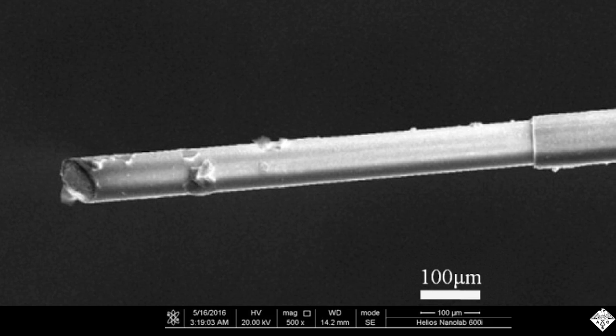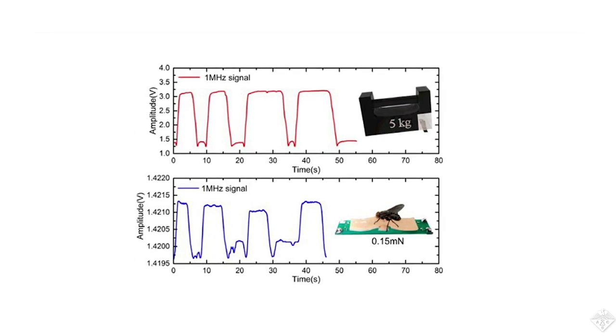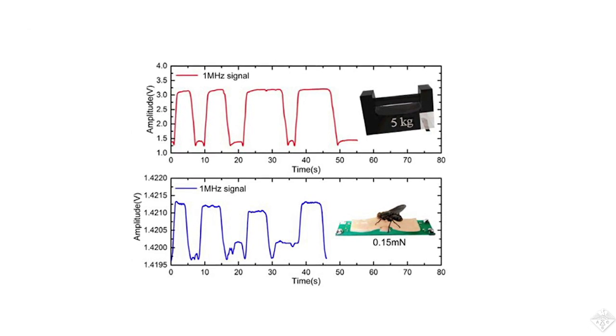The team embedded the ends of the wires in a silicon-rubber skin. The hairy skin could repeatedly detect a range of pressures, including the landing of a fly, a light wind, and a 10-pound weight.